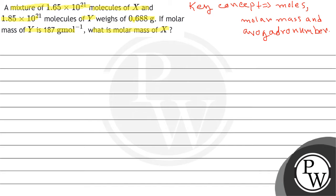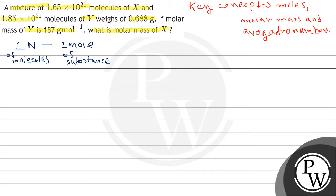तो हम पहले देख लेते हैं, जो Avogadro number होता है वो क्या है। 1 Avogadro number N equals 1 mole — मतलब Avogadro number of molecules. इसका मतलब N number of molecules अगर होगा, तो वो है 1 mole of substance, equal to 6.023×10²³ number of molecules.